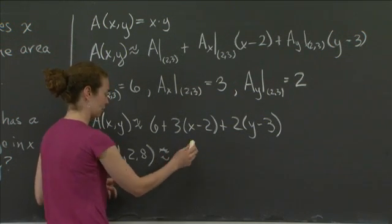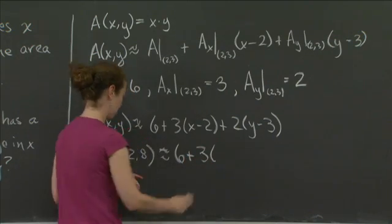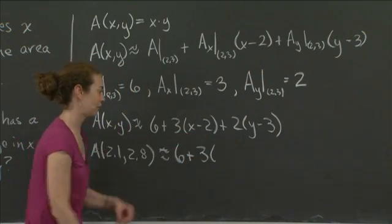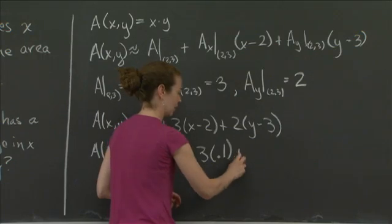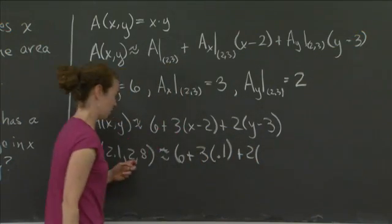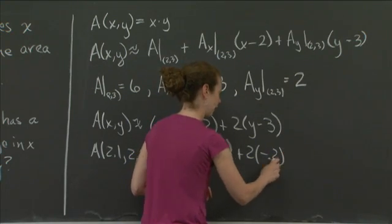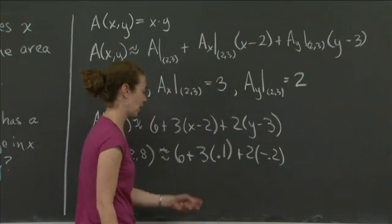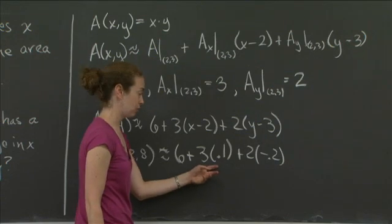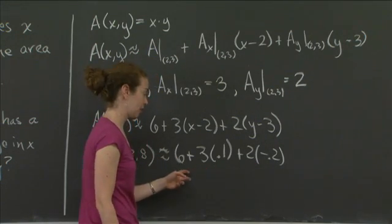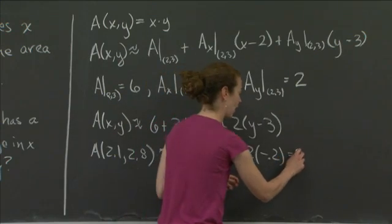I get that this is equal to, well, I'll keep writing approximately just to be safe, is 6 plus 3 times 2.1 minus 2 gives me a 0.1 there. And 2 times 2.8 minus 3 gives me a negative 0.2 there. So I get a negative 0.4, I get a positive 0.3. So together, this is a negative 0.1. 6 minus 0.1 gives me 5.9.